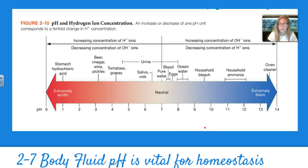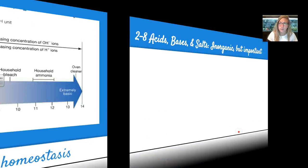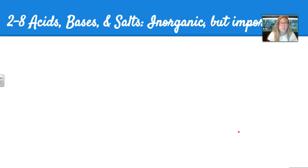If blood pH gets greater than 7.8, you would go into uncontrolled muscle contractions. Blood pH is something frequently monitored in the hospital, and we'll talk about how pH affects the body more in later chapters.